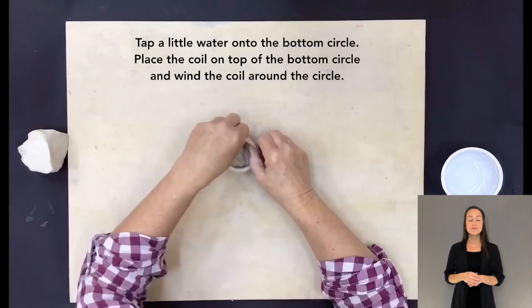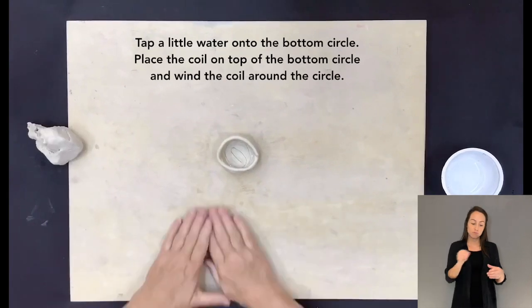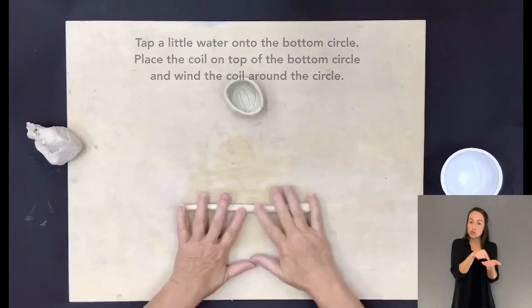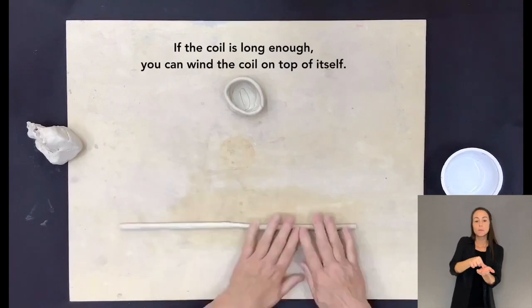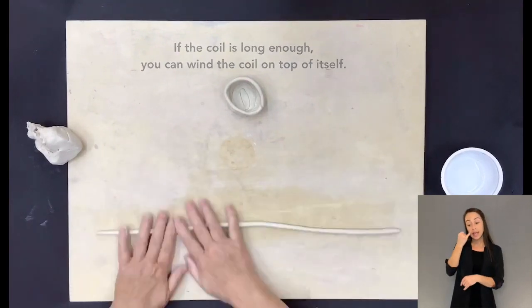Tap a little water onto the bottom circle. Place the coil on top and wind the coil around the circle. If the coil is long enough, you can wind the coil on top of itself.